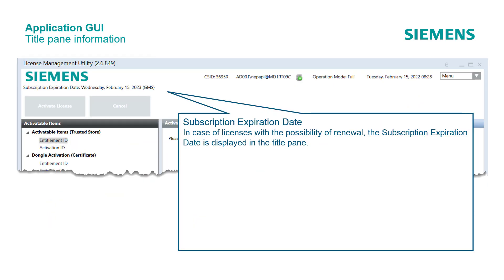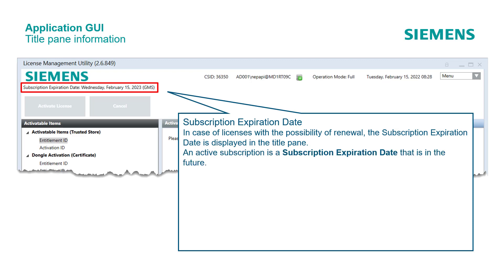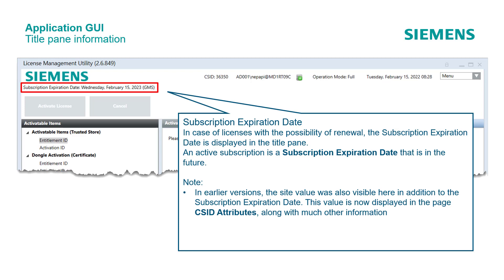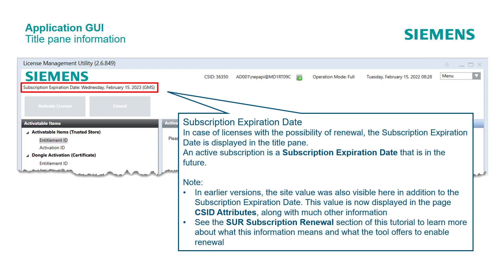As already known, LMS supports licensing of various products. The subscription expiration date is only displayed when the customer is offered product license renewal. In order to get new software versions, new features, and bug fixes, a site must have an active subscription — meaning a subscription expiration date that is in the future. Please note: in earlier versions, the site value was also visible here in addition to the subscription expiration date. This value is now displayed in the page CSID attributes, along with other information. See the SUOR subscription renewal section of this tutorial to learn more about what this information means and what the tool offers to enable renewal.